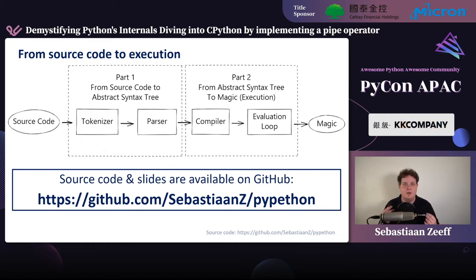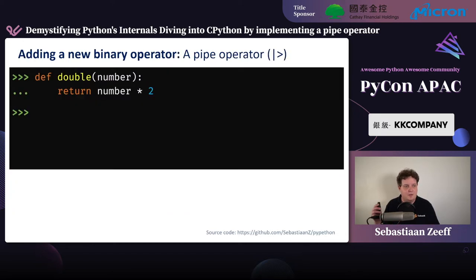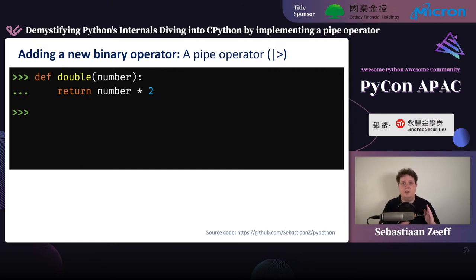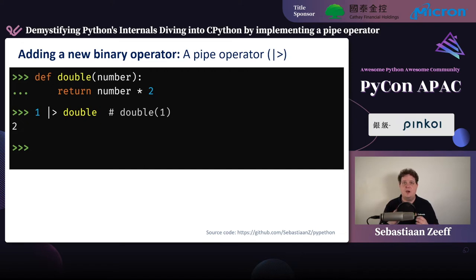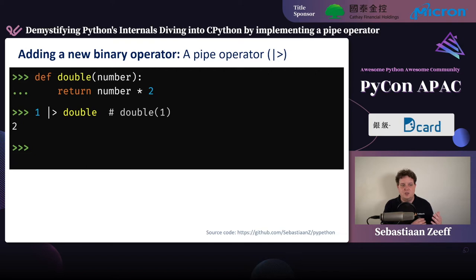We're going to implement a pipe operator. Pipe operators work with simple functions — they take one argument and return one value. If you look at a double function that takes one argument and doubles it, normally you'd call it as double(1). But the pipe operator lets you start with the argument, then use the pipe operator to pipe that argument into the function. This expression would be equivalent to calling the function with one, and you just get two as a result.